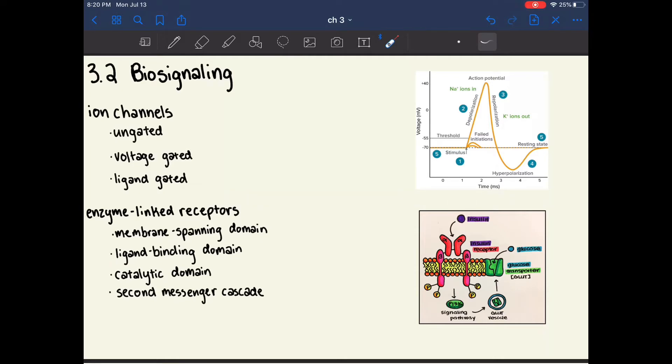Ion channels are involved in a process called facilitated diffusion, which is a passive transport mechanism, which means that energy or ATP is not necessary to make the transport happen. This type of transport goes down the concentration gradient, which means that the molecules must flow from an area of high concentration to low concentration.